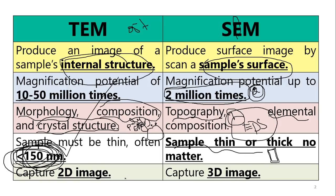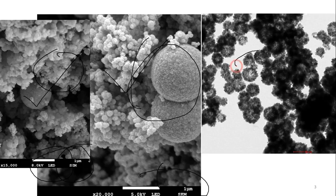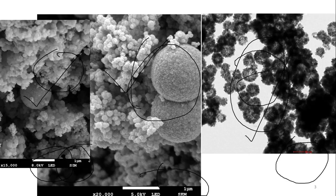SEM captures 3D images while TEM captures 2D images. SEM images are at a lower resolution in microns, while TEM images are at high magnification. Both are very powerful characterization techniques — TEM is a little bit more powerful than SEM. Most institutions have SEM available, but not TEM, because TEM is very, very expensive. Moreover, these techniques are very useful in industry for finding cracks, defects, and imperfections.